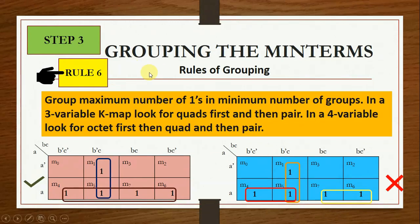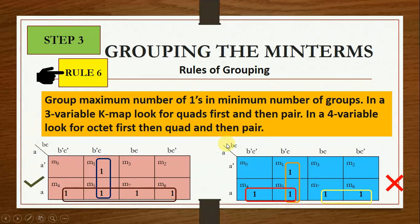Rule 6: group the maximum number of ones in the minimum number of groups. In a 3-variable KMAP, always look for quads first; if quads are not present, look for pairs. In a 4-variable KMAP, always look for octets first; if not present, look for quads; if not present, look for pairs. If four ones are present and adjacent, group them as a quad rather than as pairs, otherwise you will not get the minimized expression.